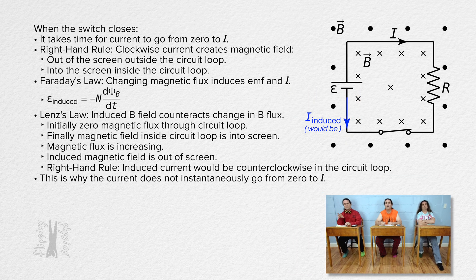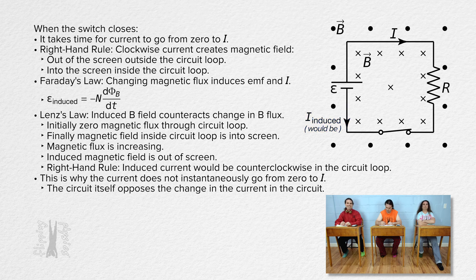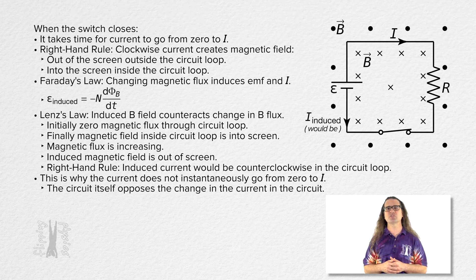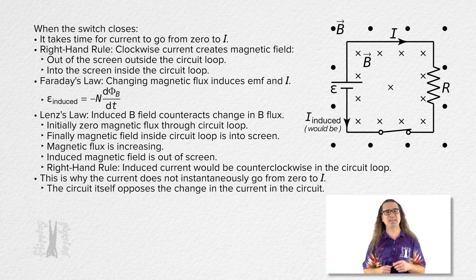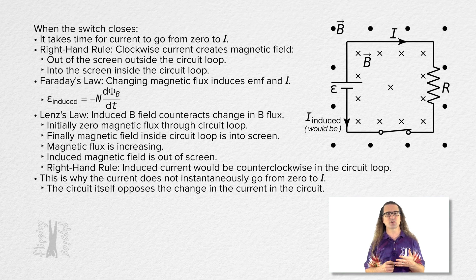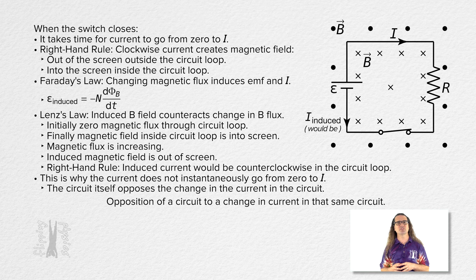So this is why the current in the circuit does not instantly change from zero to I. The current in the circuit takes time to transition from zero to I because the circuit itself opposes the change in current. Exactly. Closing the switch causes a change in the magnetic flux in the circuit loop. That changing magnetic flux induces an EMF in the circuit which is opposite the direction of the electric potential difference across the battery. And the induced current which would be in the circuit caused by this change in magnetic flux would be opposite in direction to the current in the circuit caused by the battery. The effect of this is that it slows down the change in the current from zero to I.